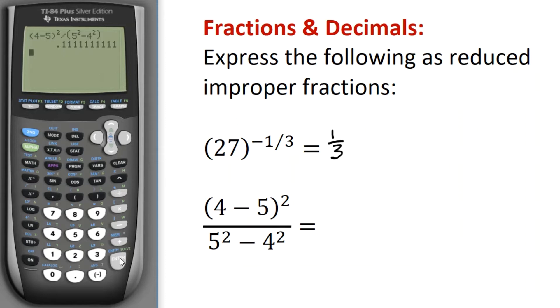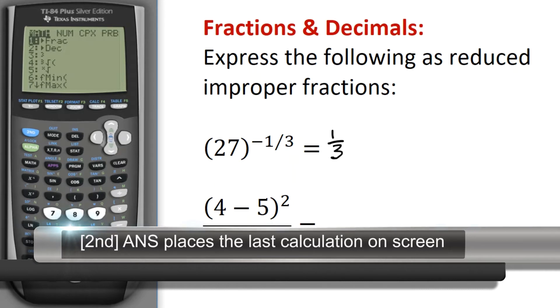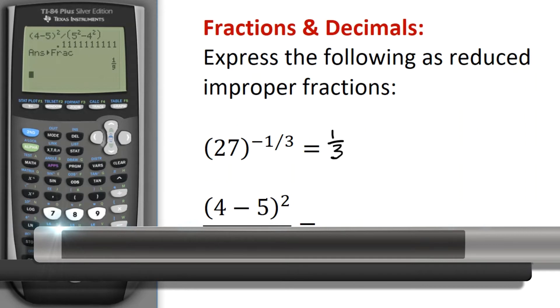Oh, darn, that's right, I needed to output this as a fraction, but that's no problem. I'm just going to say 2nd answer, and then tell it to output the answer as a fraction, and I see that my result then is 1 ninth.